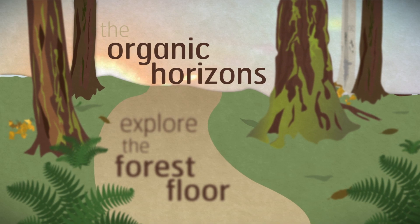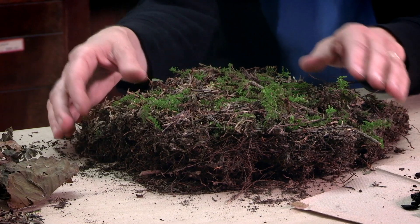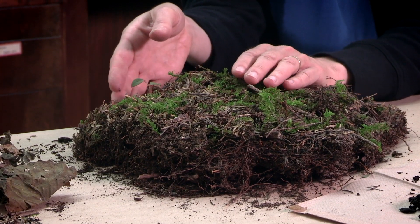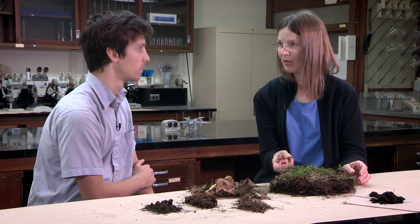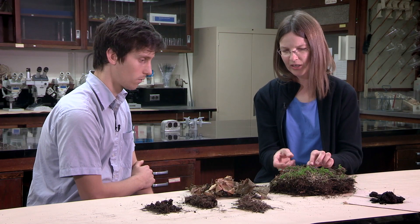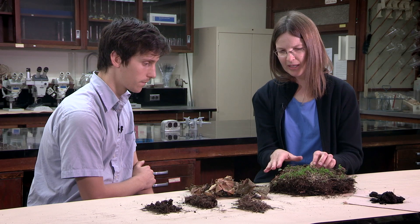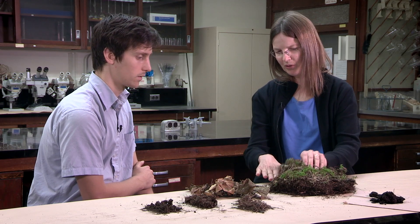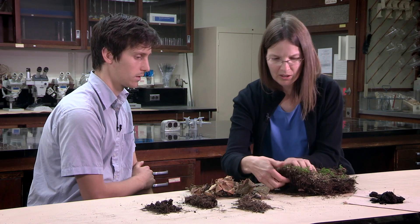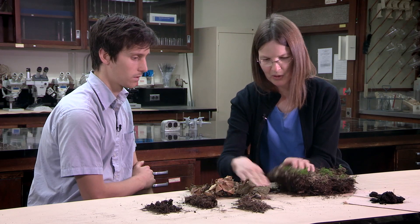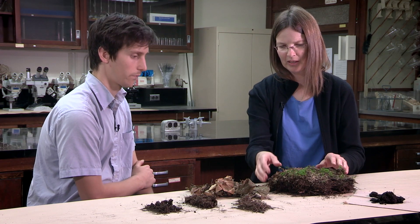So we took this sample — how are we going to begin describing it? We look closely at the different horizons that we have here. There are organic horizons that are above the mineral soil. The mineral soil would be down here — we don't have any here, but it would be below, and here are the organic horizons sitting on top.